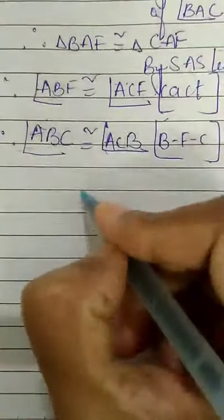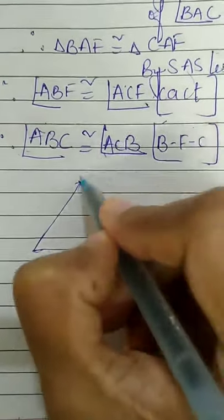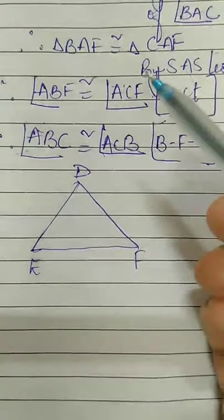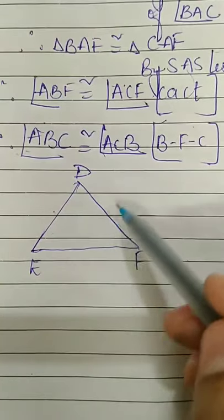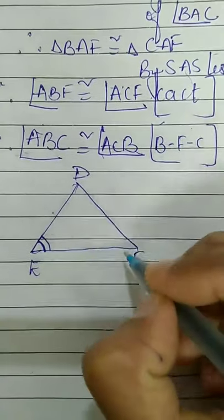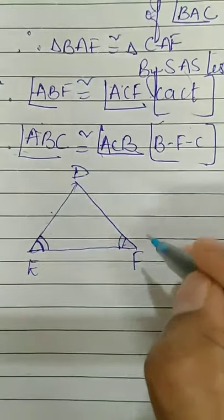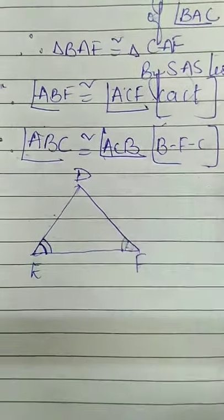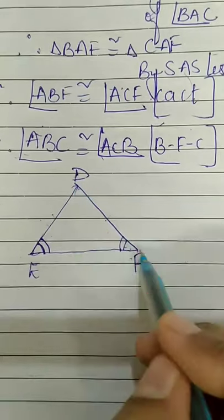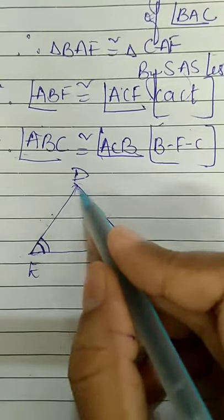The converse of isosceles triangle theorem: if you have a triangle — let us take triangle DEF — in the isosceles triangle theorem they gave the sides congruent, but here they will say that angle DEF is congruent to angle DFE. So if two angles in a triangle are congruent, then the sides opposite to them are also congruent. Side opposite to angle DEF is side DF, side opposite to angle DFE is DE. So we have to prove that side DE is congruent to DF.